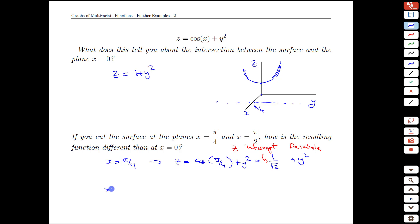And then if we continue say to pi over 2, we'll have z equals cos of pi over 2 plus y squared, but cos of pi over 2 is simply 0. So that's going to give us another parabola, same shape, except now the intercept is 0. Let's see if we can put all this together.